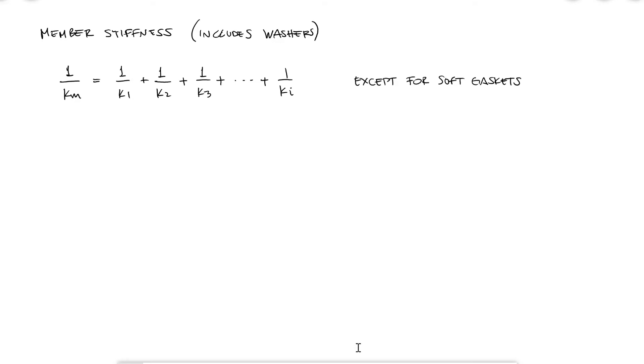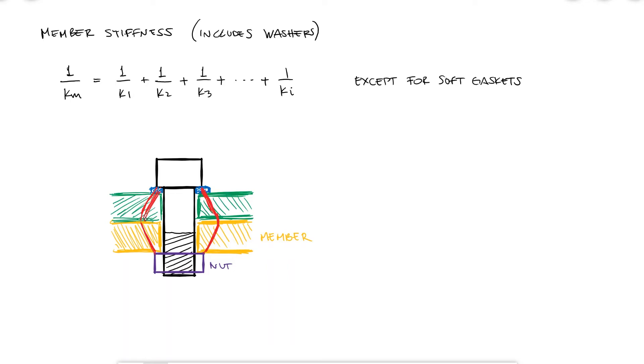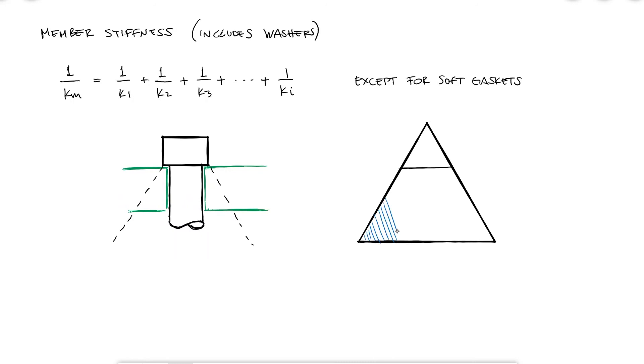When looking at the stress profile patterns within the members clamped by a fastener, you'll find that it resembles a curved conical shape. A simplified version of this, which is still more conservative than the real scenario, would be a cone with a half apex angle alpha that has taken a value of 45 degrees for old and very conservative calculations and between 25 and 33 degrees for most combinations.